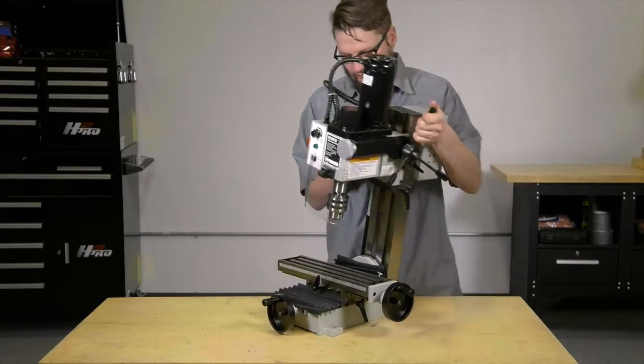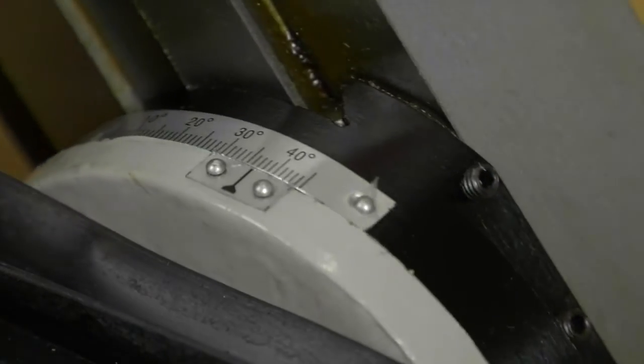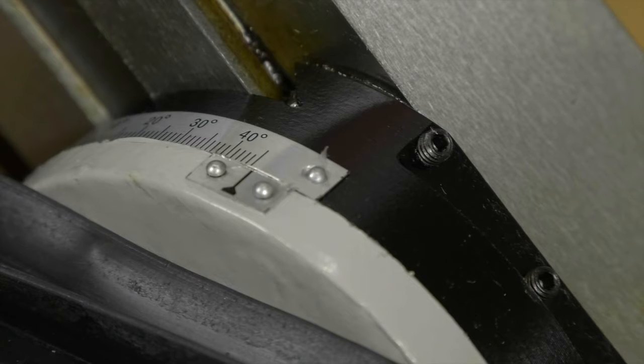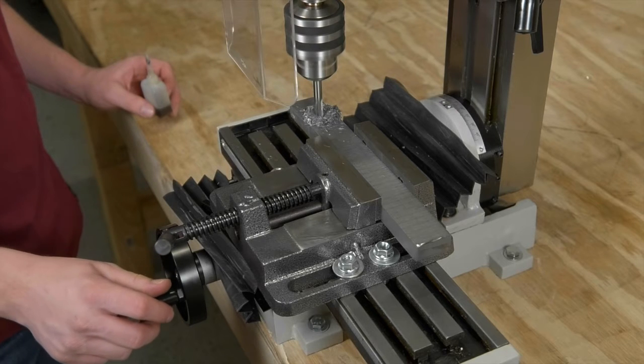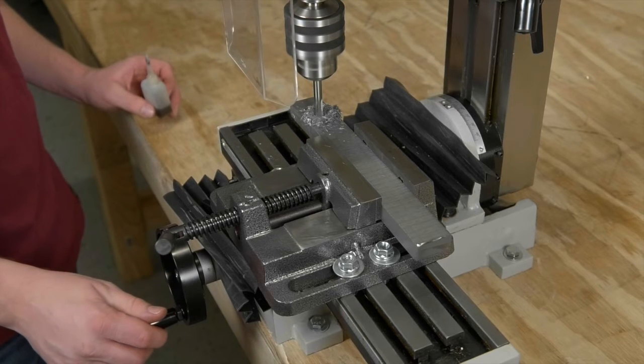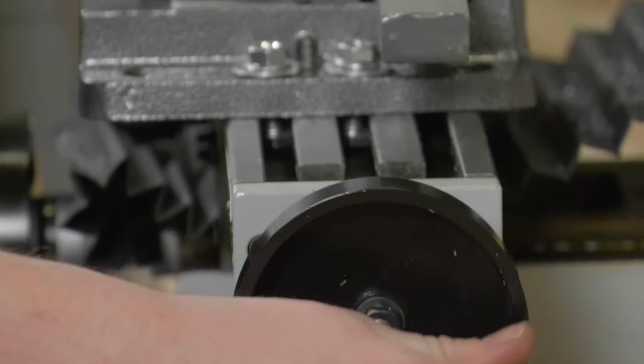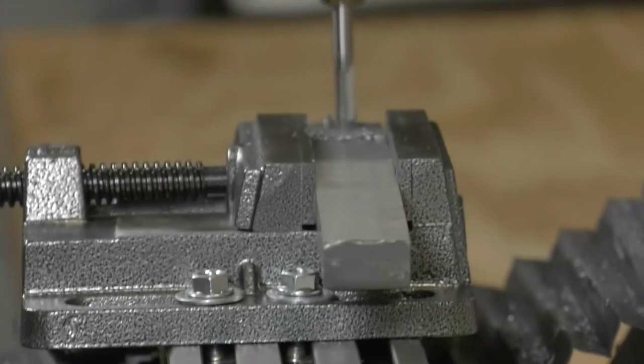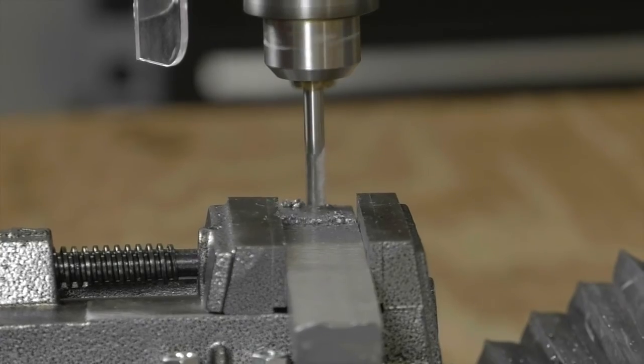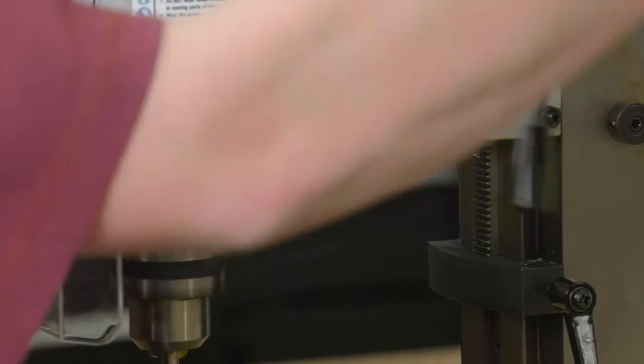The milling head and column tilt to 45 degrees left or right for added versatility. The work table has an 8-5/8 inch longitudinal travel and 4 inch cross travel with a 7 inch headstock travel.